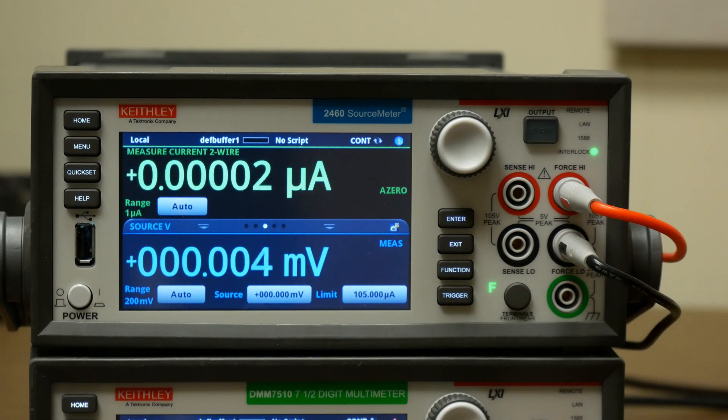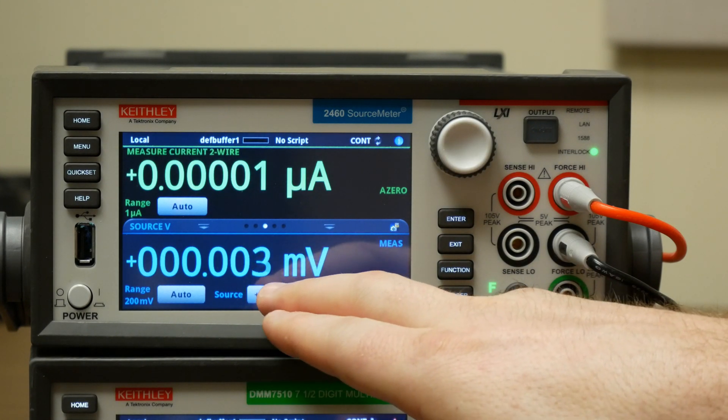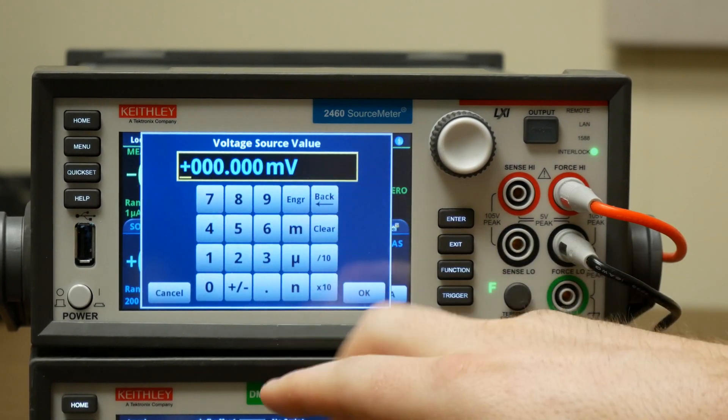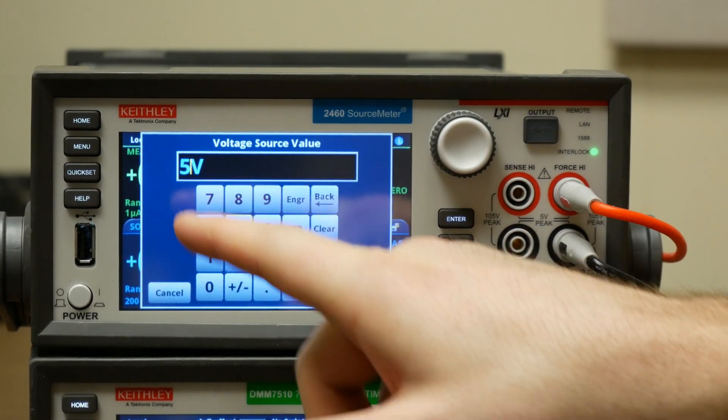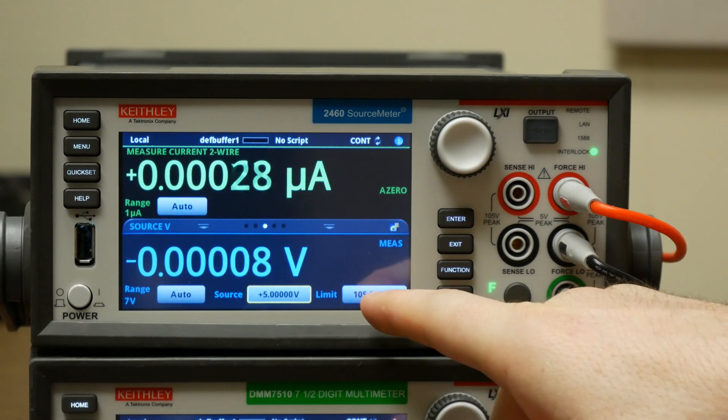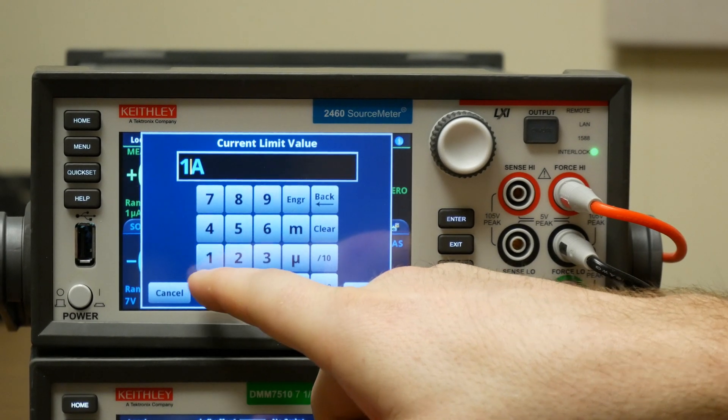Okay, so first we're going to set up the source configuration list. What you're going to do is set your first source value, in this case we're going to do 5 volts, and set up your source limit value. In this case we'll do 10 milliamps.